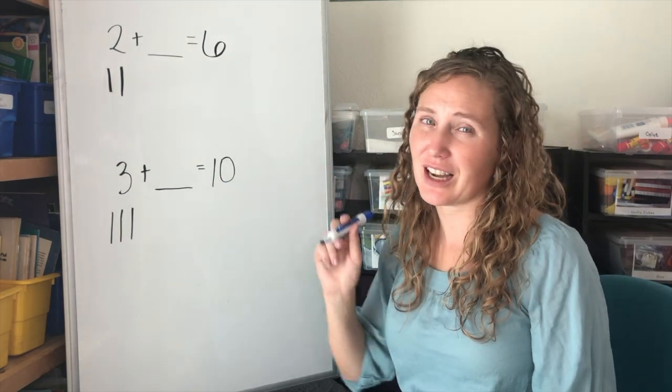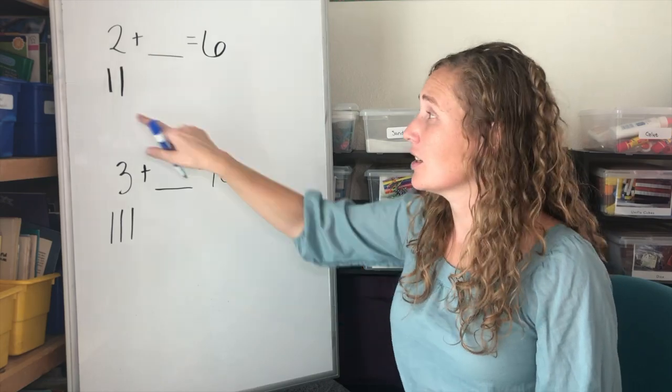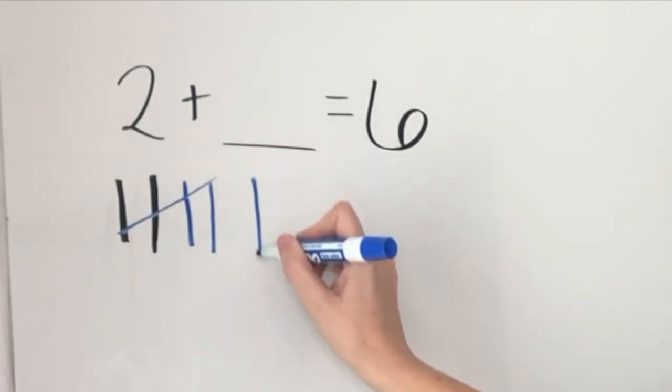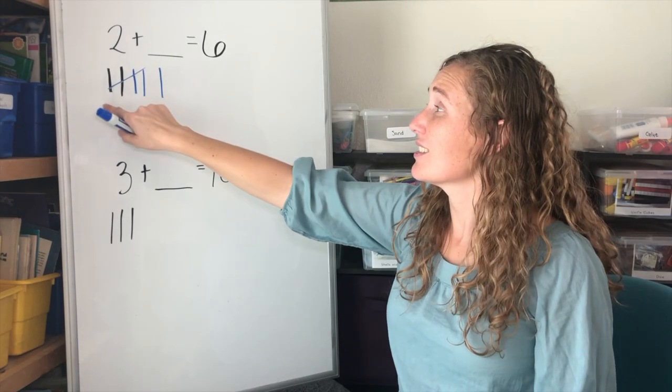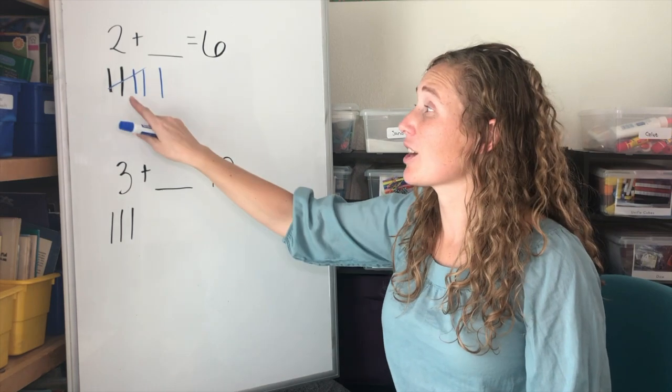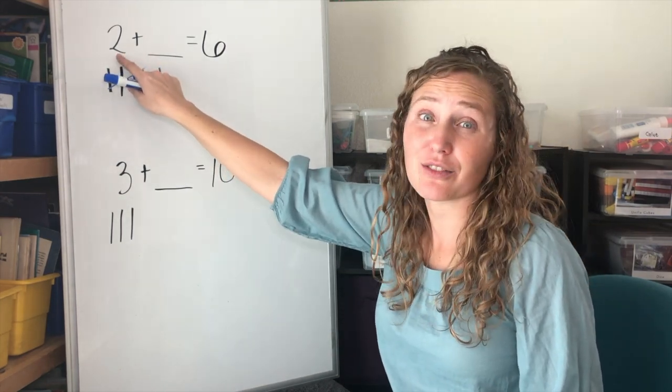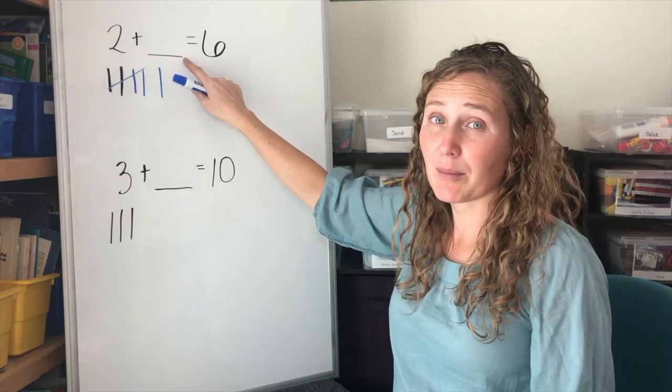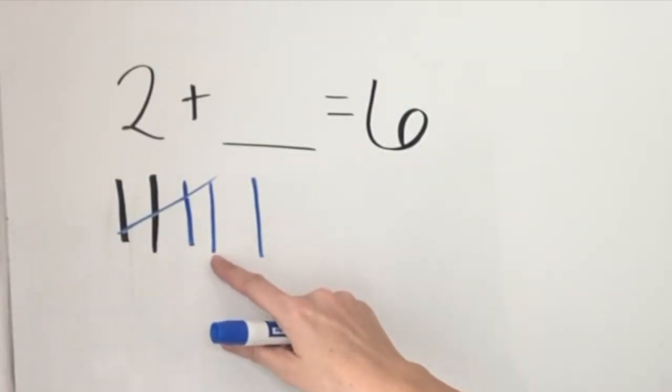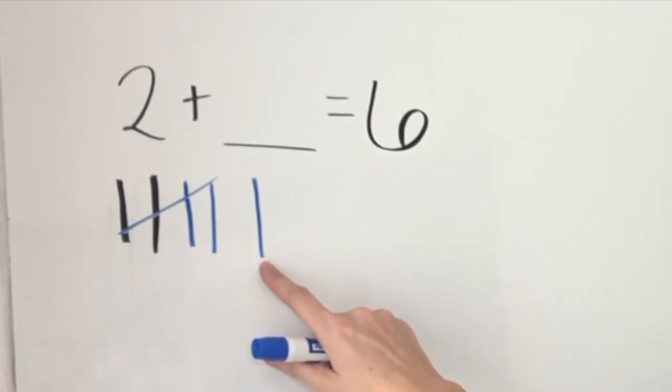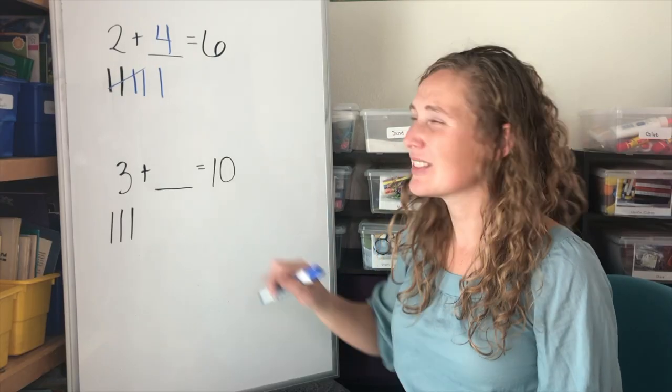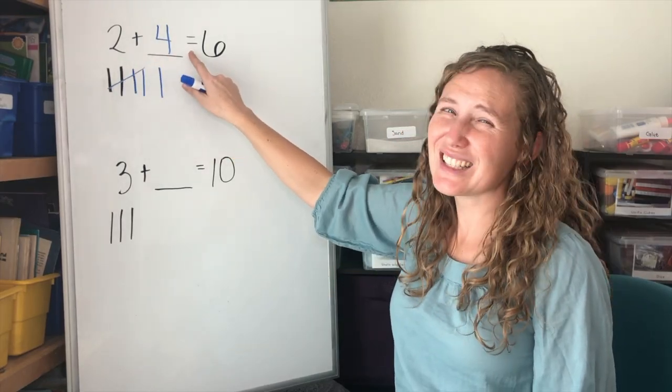We already have two tally marks. I'm going to use a different color to count up to six. Two, three, four, five, six. Six total tallies. How many blue tallies do we have? Because our black tallies is part of our two. So to find our missing number, we need to count the ones we made with blue. One, two, three, four. Four blue tallies means our missing number is the number four. Two plus four equals six.